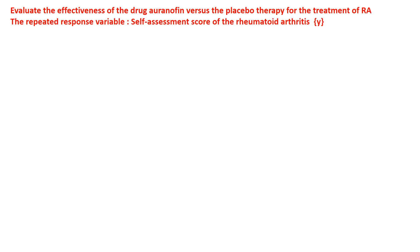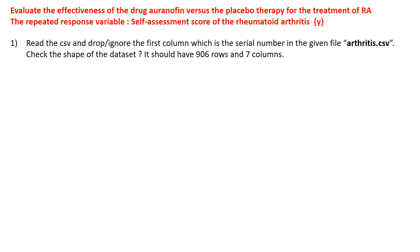The objective is to evaluate the effectiveness of the drug Ornafin versus placebo therapy for treatment of rheumatoid arthritis, where the repeated response variable Y is the self-assessment score. Question 1: import the relevant libraries, read the CSV file (arthritis.csv), drop the first column which is just a serial number, and check the shape — it should have 906 rows and 7 columns.